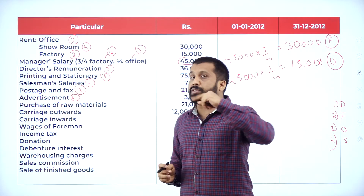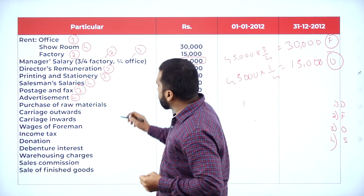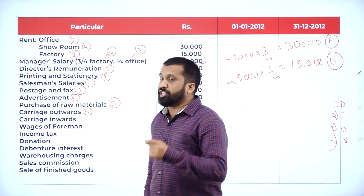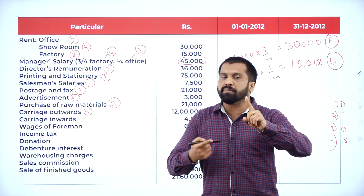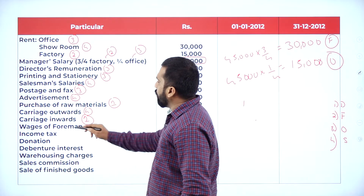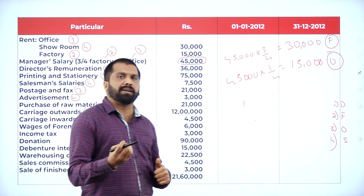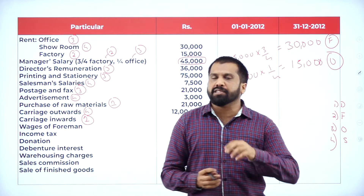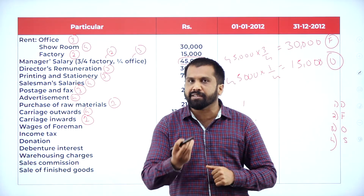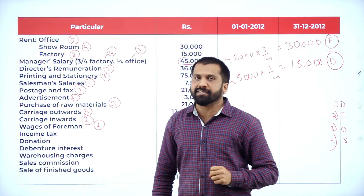Purchase of raw material — go back to the first step; in step 1 we account for purchases, so it is category 1. Carriage outward — carriage inward means the first step, but outward means the last step, category 4. Carriage inward — as mentioned, first step, category 1. Wages of foreman — a foreman is like a manager who directs and guides workers in the factory, so this salary comes under factory, category 2.